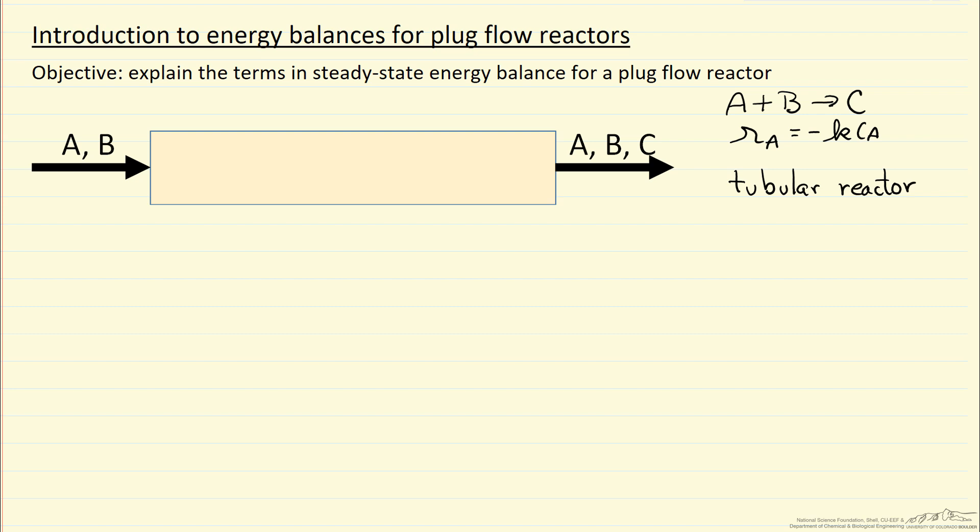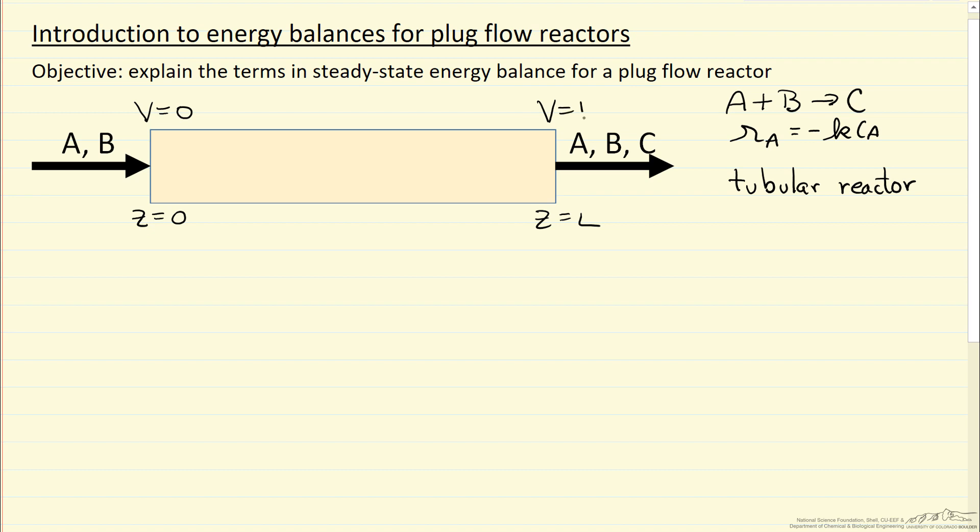So tubular reactor, this figure is supposed to represent a cross section of tubular reactor where we'll use notation distance z equals zero and then z equals the length of reactor, or v equals zero and a cumulative volume, so v is the total volume of the reactor here.